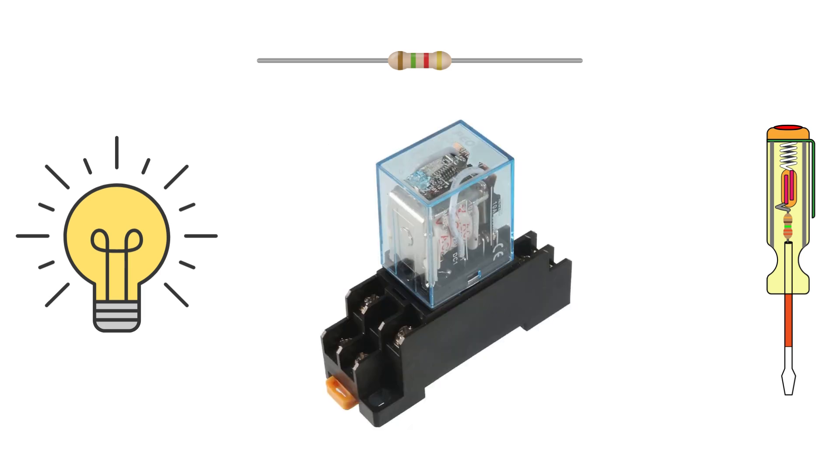A relay is an electromechanical switch that allows a low power circuit to control a high power circuit. It acts as a bridge between two electrical circuits making automation and control easier in various applications.